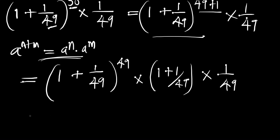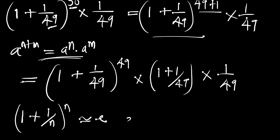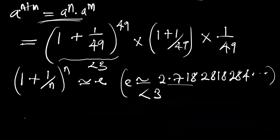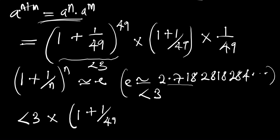Now let's consider Euler's formula: it states that 1 plus 1 over n, all to the power of n, is equivalent to e, where e is approximately 2.718281845 and so on. What we can get from Euler's number is that this number is less than 3, so the whole of this expression is less than 3.